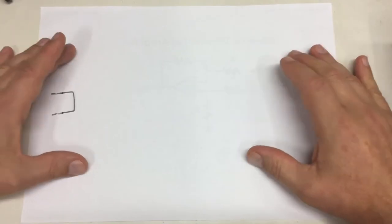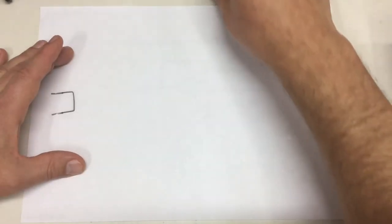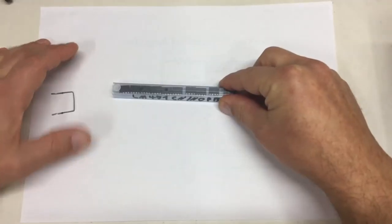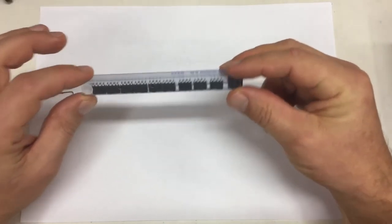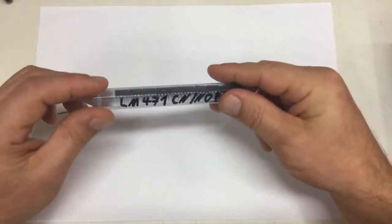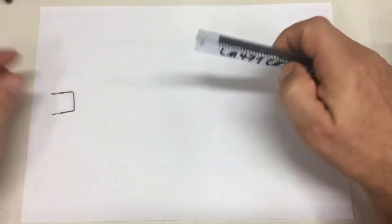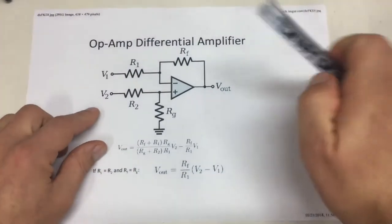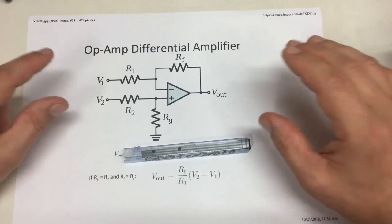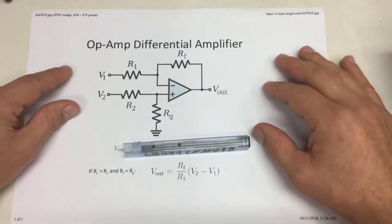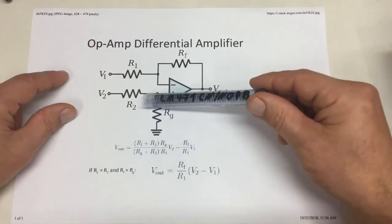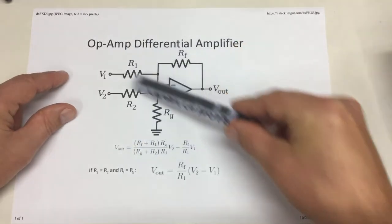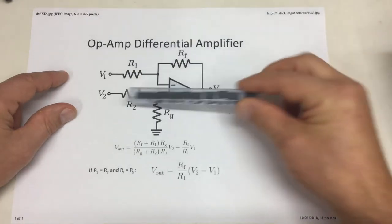One solution immediately comes to mind: use an op-amp. I have here LM471s — they are cheap, available, and quite old by the way. And at least when we're talking about high side current sensing, which I will concentrate on mainly, you would use that op-amp in a differential amplifier configuration.